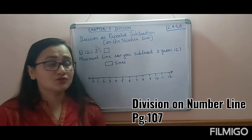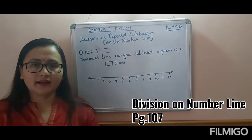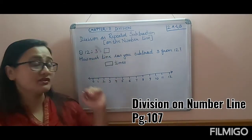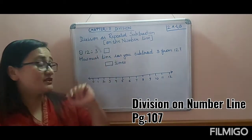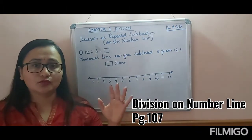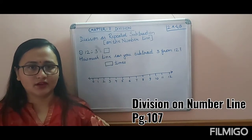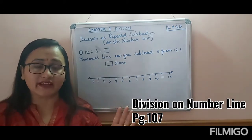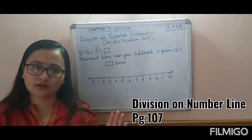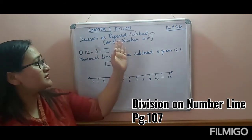Good morning, dear students of Class 2A and B. Welcome back. We will continue with the same chapter — Chapter 7, Division. Last time we learned that division means to put into equal groups. I had asked you to do Exercise 7A; I hope you all have done it in the book itself.